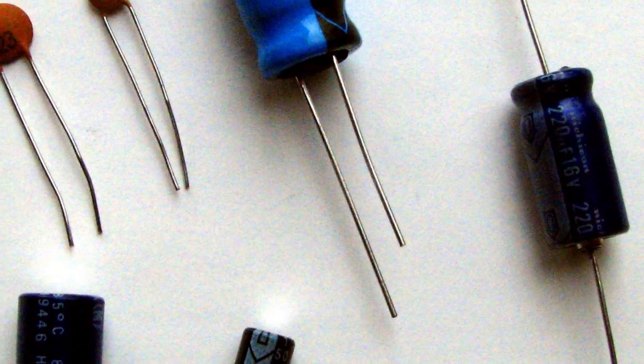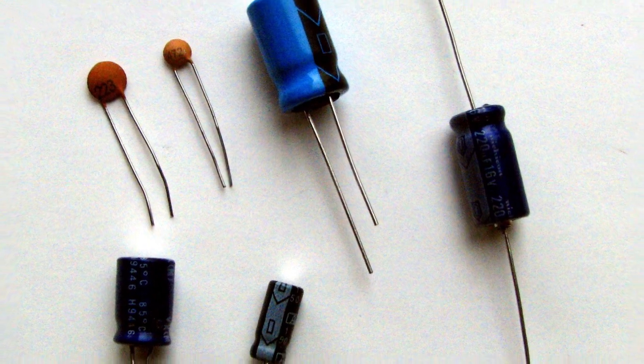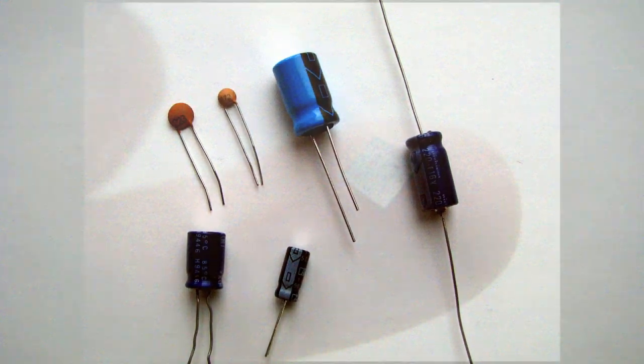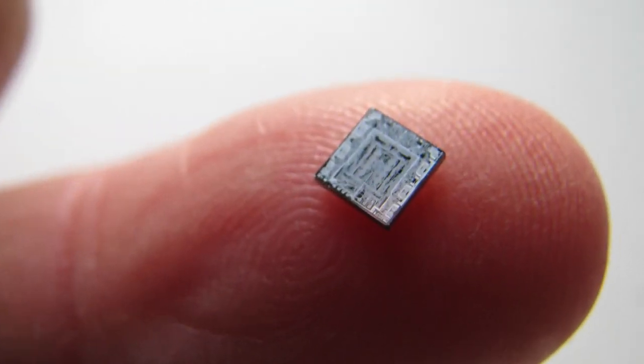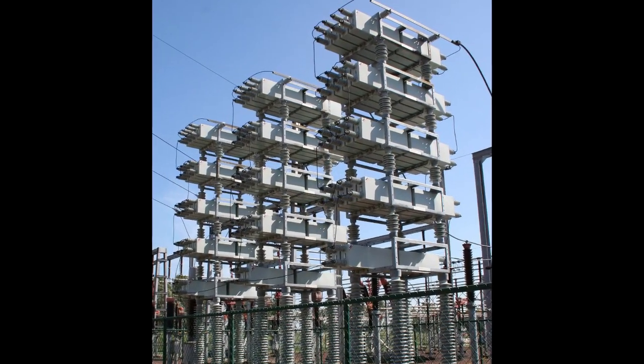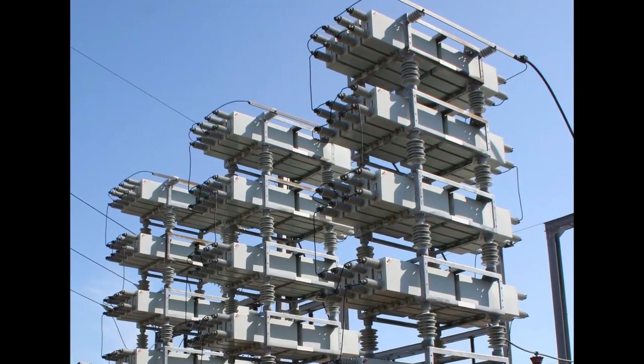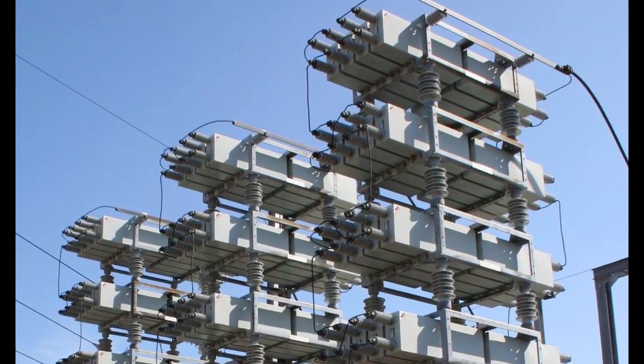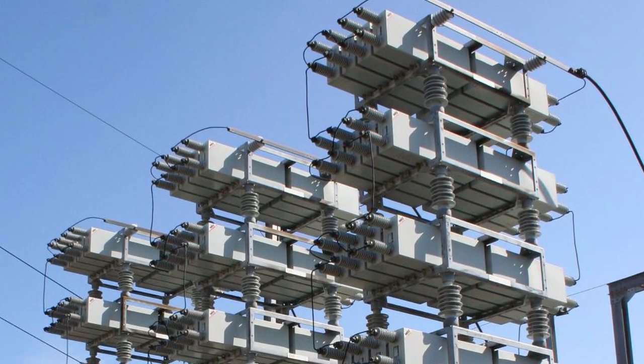These devices are capacitors. They are an essential component of many electronic circuits. They range in size from tiny etchings on a microchip to huge devices used to stabilize high voltage transmission lines. Despite their various shapes and sizes, all capacitors have a similar function.